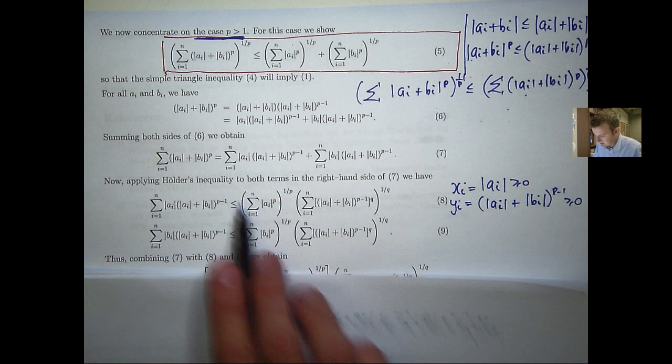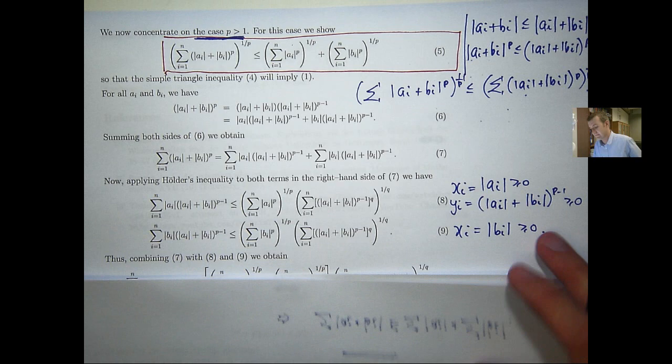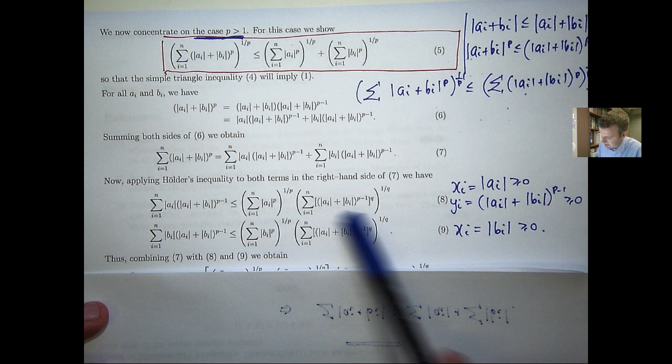And similarly in 9, the yi is the same. Your xi is just absolute bi, which again is non-negative. So this has got to be less than or equal to this plus this, just continuing on from 7.